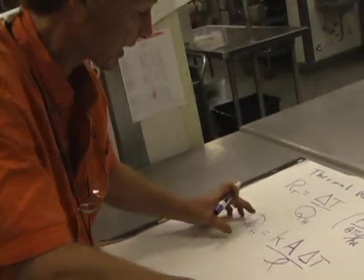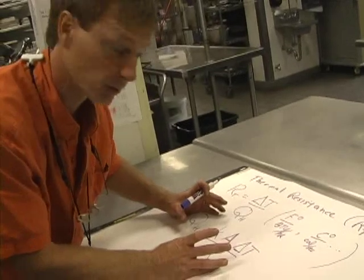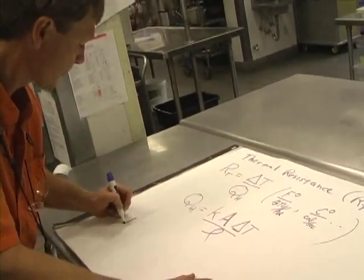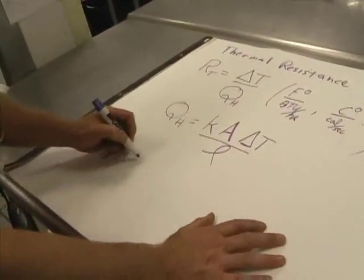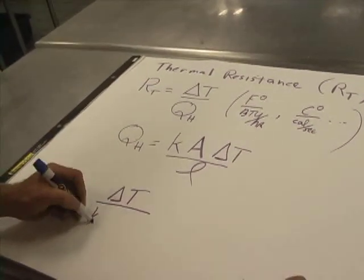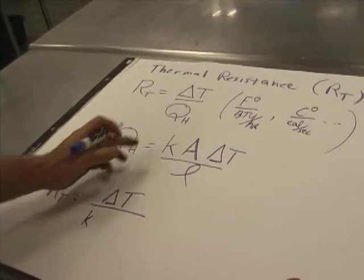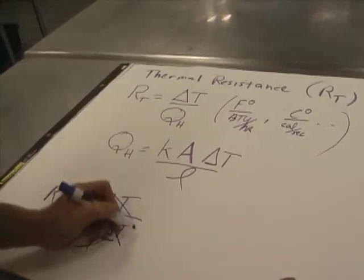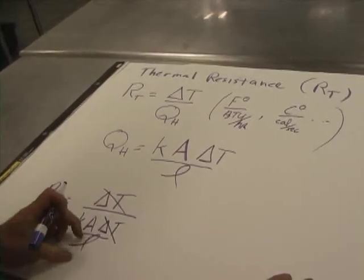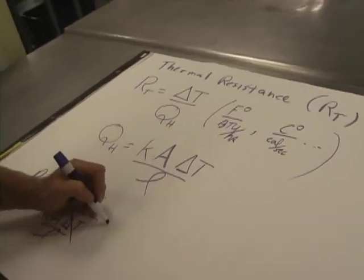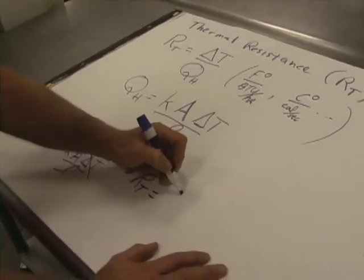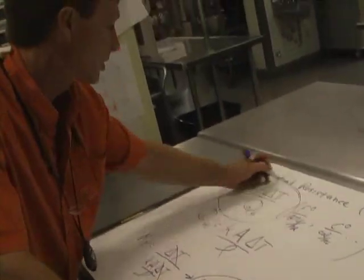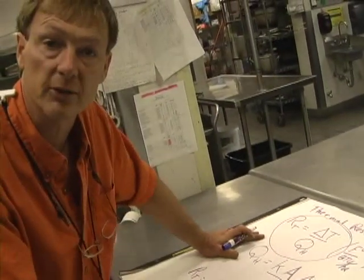And what I can do is I can take this expression for heat transfer rate and I can put it right here. There's delta T, here's my heat transfer rate: KA delta T over L. The delta T is canceled. One over one over L is L. And so I get thermal resistance is the thickness divided by the conductivity divided by the area. Those are my two thermal resistance equations.